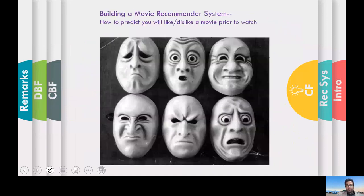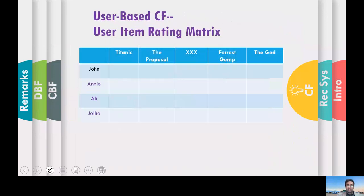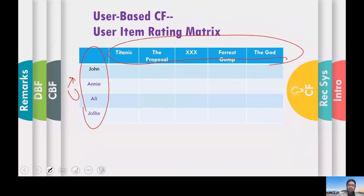Let's take an example. Assume after your graduation you go to Netflix and they ask you to build a recommender system for them. They give you a dataset with four users — John, Annie, Ali, and Julie — and five movies.